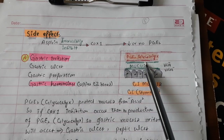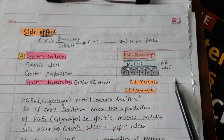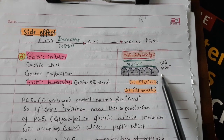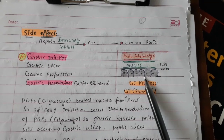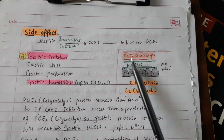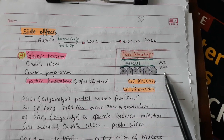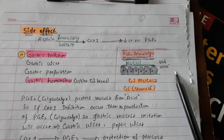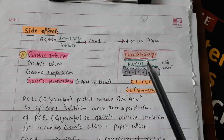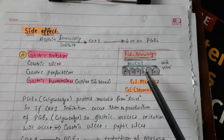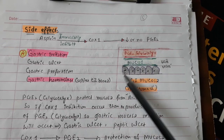Prostaglandin E2 (glycocalyx) and bicarbonate, and also gastrin which stimulates mucosal growth — these are four protections for the gastric mucosa: mucus, glycocalyx (prostaglandin E2), bicarbonate, and gastrin. The gastric mucosa is replaced within just a few days.